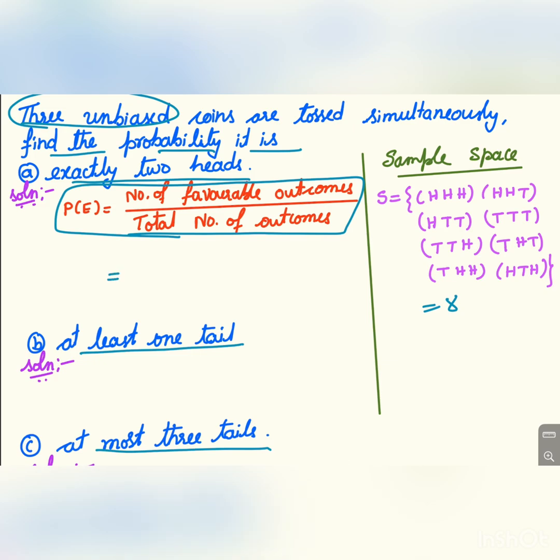For exactly two heads, the favorable outcomes are HHT, HTH, and THH - that's three. So the probability is 3/8.